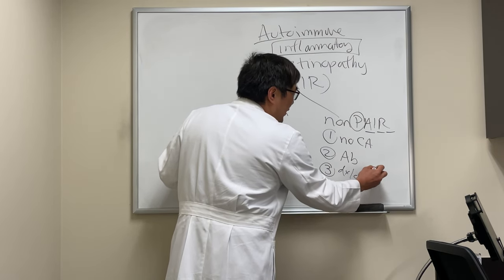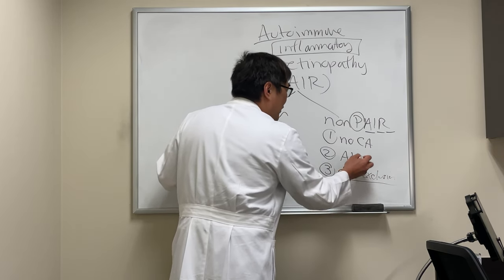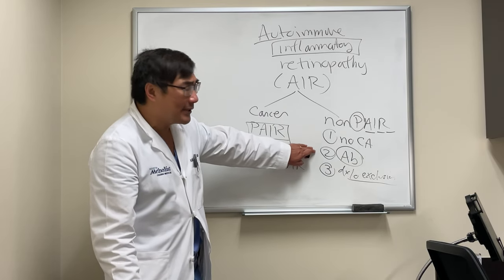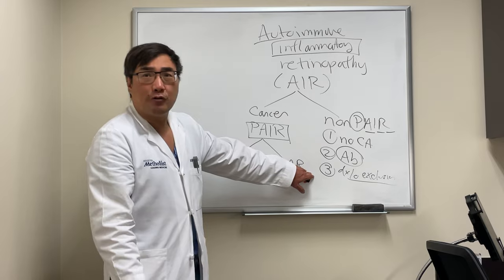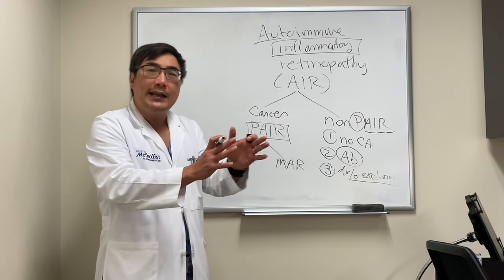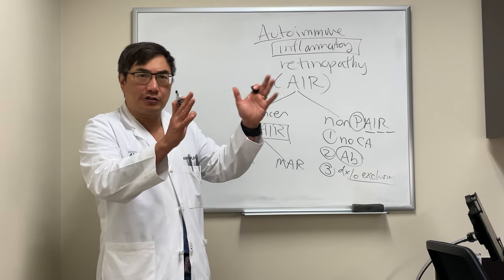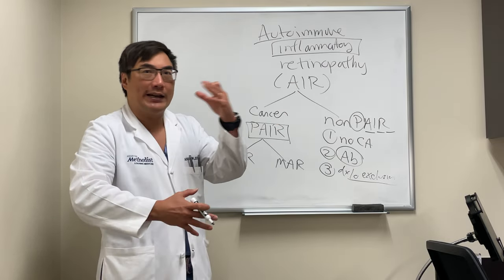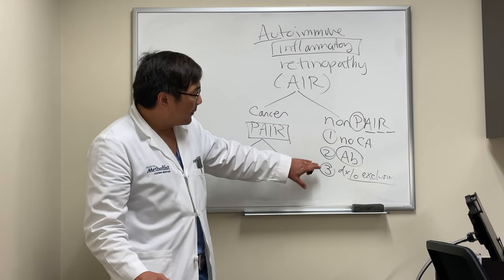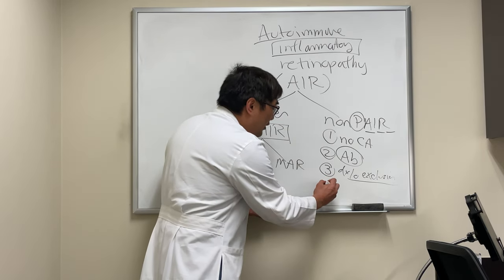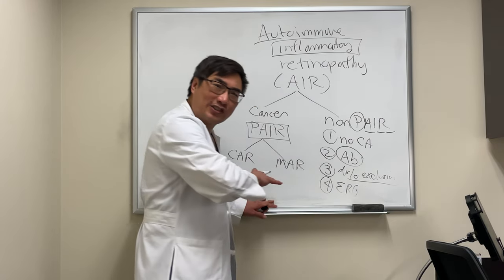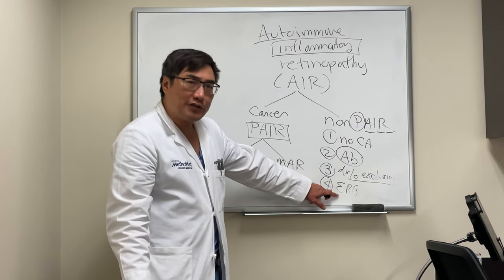You cannot rely on the presence of these antibodies alone to make the diagnosis, because those antibodies are present in people with other retinal diseases. The retina is an immunoprivileged site, and exposing it to trauma, surgery, or inflammation will generate antibodies. So you need no cancer, the antibodies, a diagnosis of exclusion, and you have to prove it's retinal — because usually the retina looks normal — so we do an ERG.